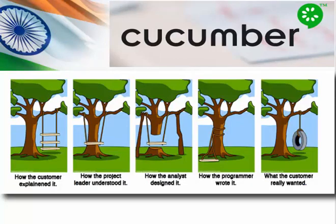By seeing the image itself you can guess what we are going to discuss — it is about requirements. The first image shows how the customer explained it, the second shows how the project leader understood it, and there is a big difference. The third shows how the analyst designed it, and the fourth shows how the programmer wrote it. But only in the fifth image can we understand what the customer really wants. All five are totally different images — how do we resolve this confusion?